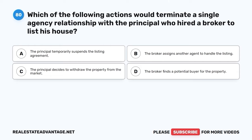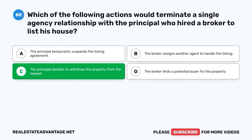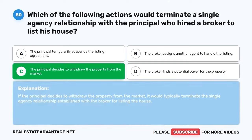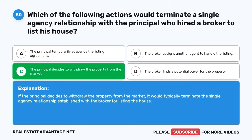Question 80. Which of the following actions would terminate a single-agency relationship with the principal who hired a broker to list his house? A. The principal temporarily suspends the listing agreement. B. The broker assigns another agent to handle the listing. C. The principal decides to withdraw the property from the market. D. The broker finds a potential buyer for the property. The correct answer is C: The principal decides to withdraw the property from the market. If the principal decides to withdraw the property from the market, it would typically terminate the single-agency relationship established with the broker for listing the house.